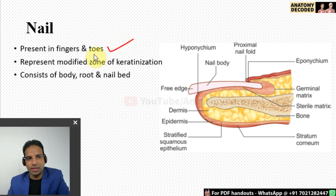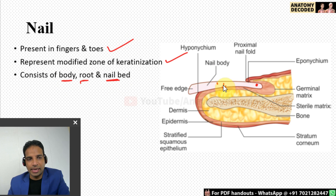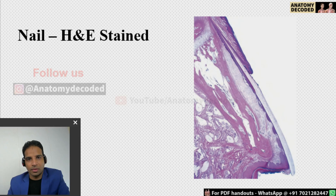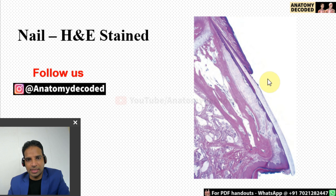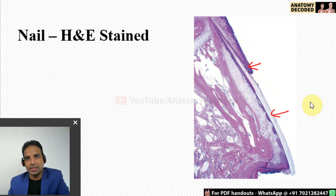Nails are present in fingers and toes and represent a modified zone of keratinization. They consist of the nail body, root, and nail bed. Here is an H&E stained image of the nail showing the nail body, the proximal fold of the skin, and the nail bed beneath. Nail slides are not asked in exams — only thin skin and thick skin slides are exam slides; appendages of the skin do not have separate exam slides.